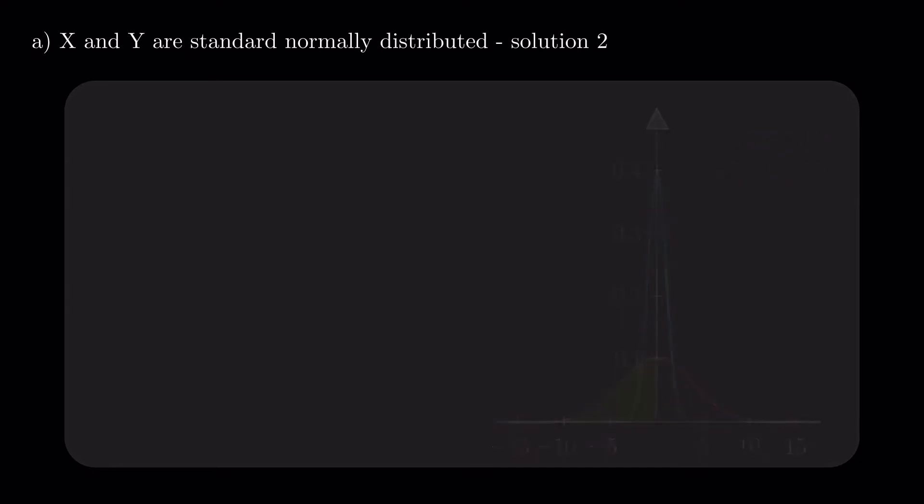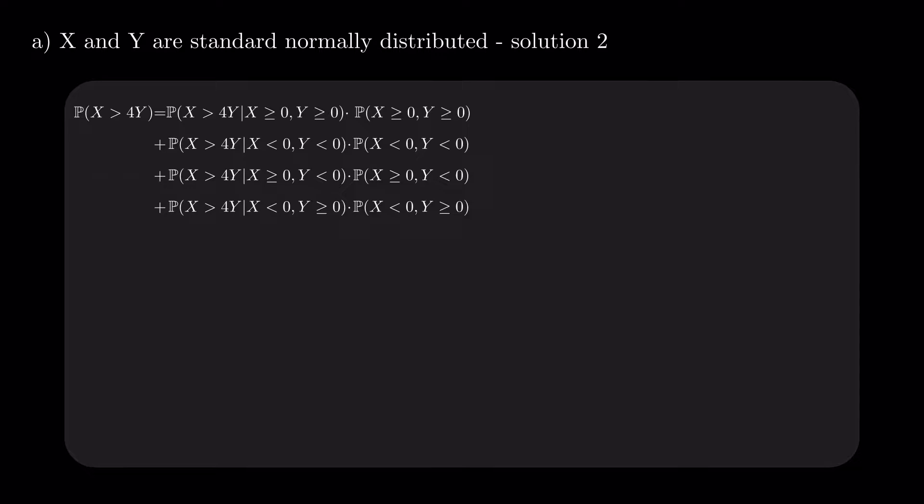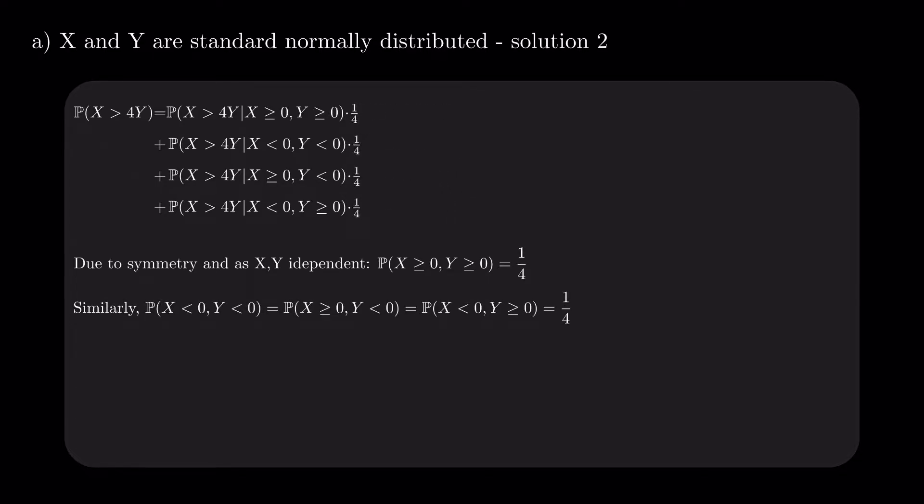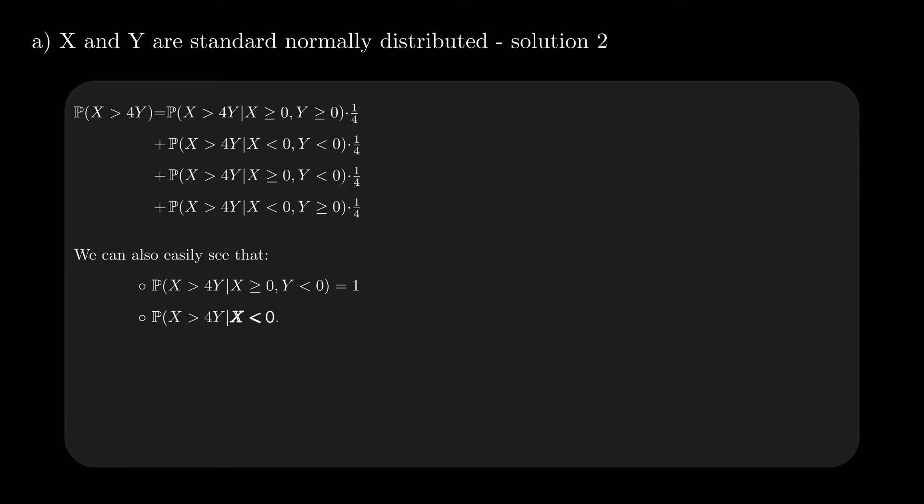We employ this partition to extend the probability of X > 4Y as a sum of conditional probabilities. Given what we said before that X and Y are independent and symmetrical around 0, the probabilities used to weight the sum are all equal to 1/4. We can also easily see that X is always greater than 4Y when X is positive, Y is negative, and X is never greater than 4Y when X is negative, Y is positive.